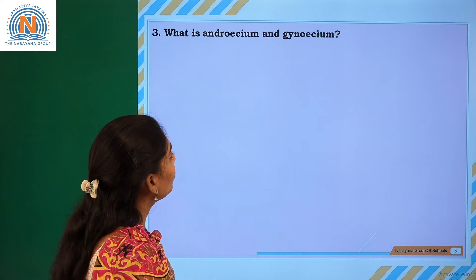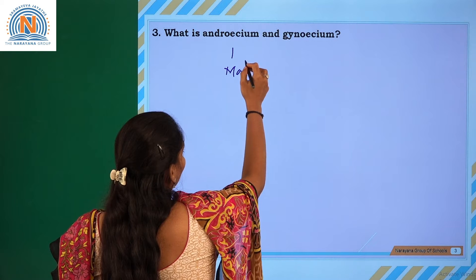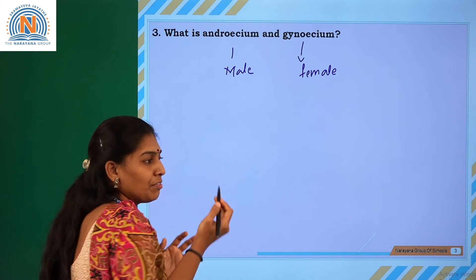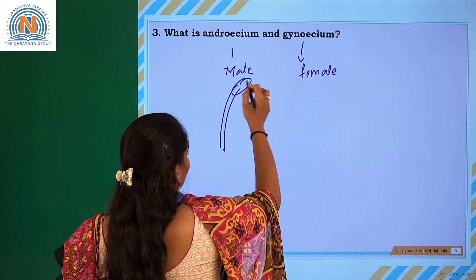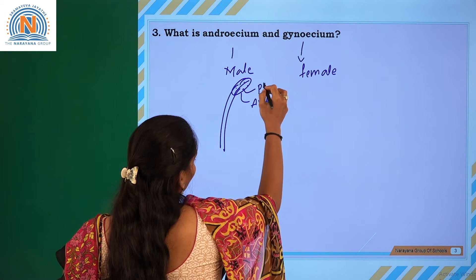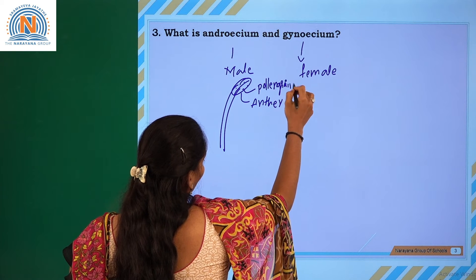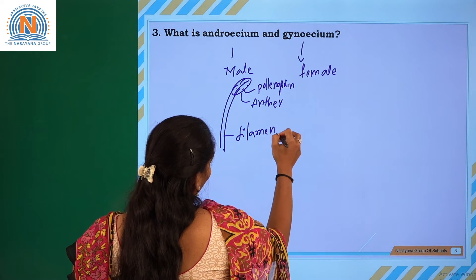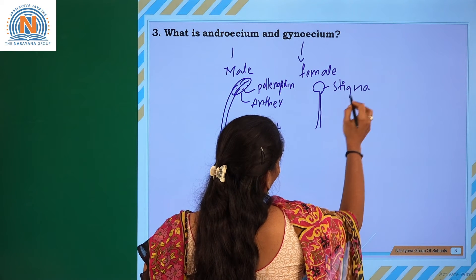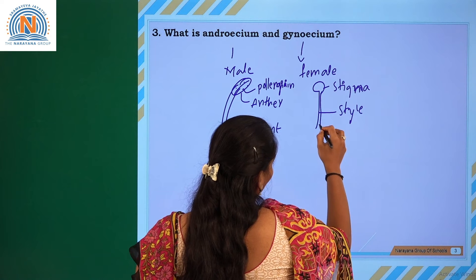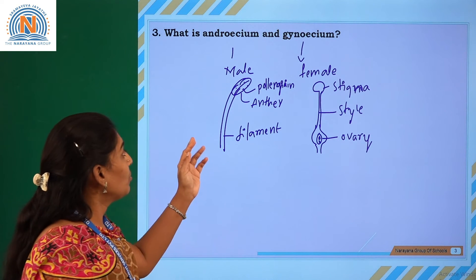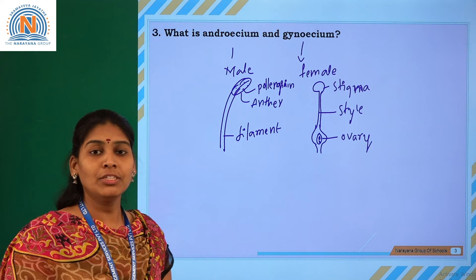The next question is: what is the androecium and the gynoecium? The androecium is the male part of the flower, and the gynoecium is the female part. The male part includes the anther, pollen grains, and filament. The female part includes the ovary and ovules. These are very important parts involved in the reproduction process.